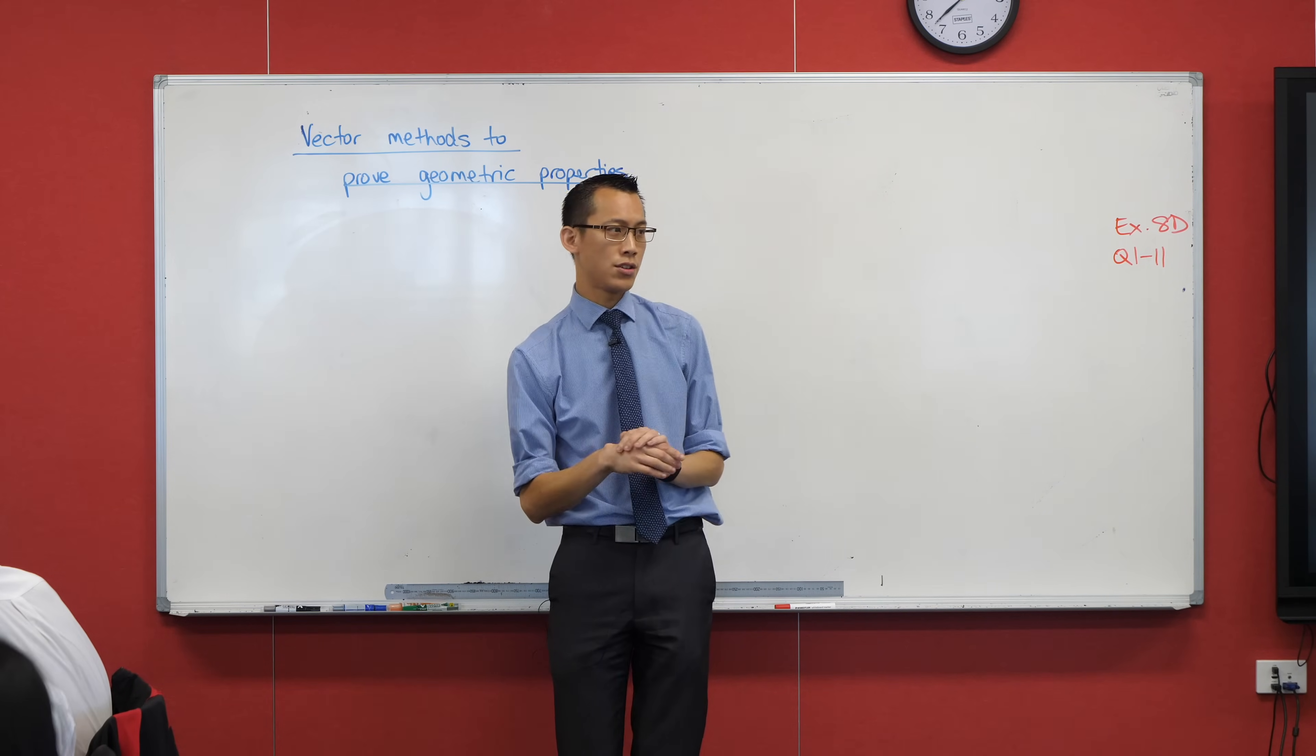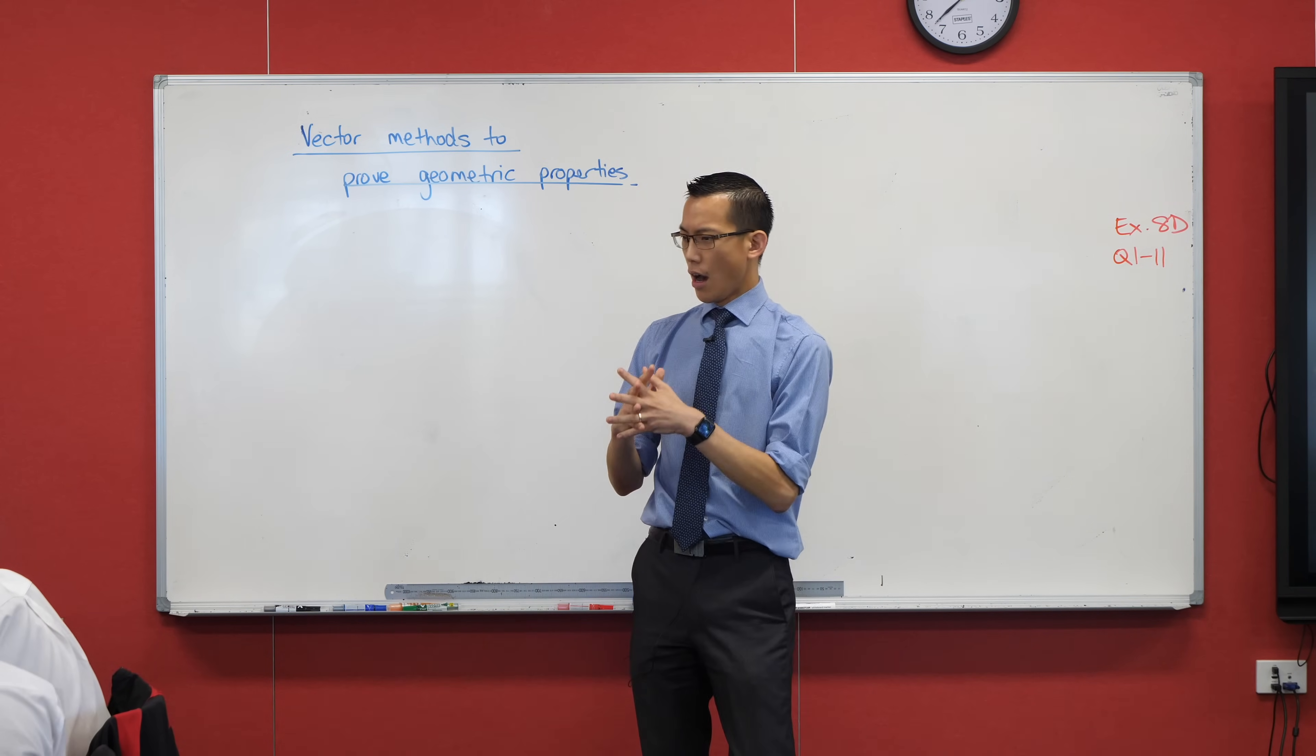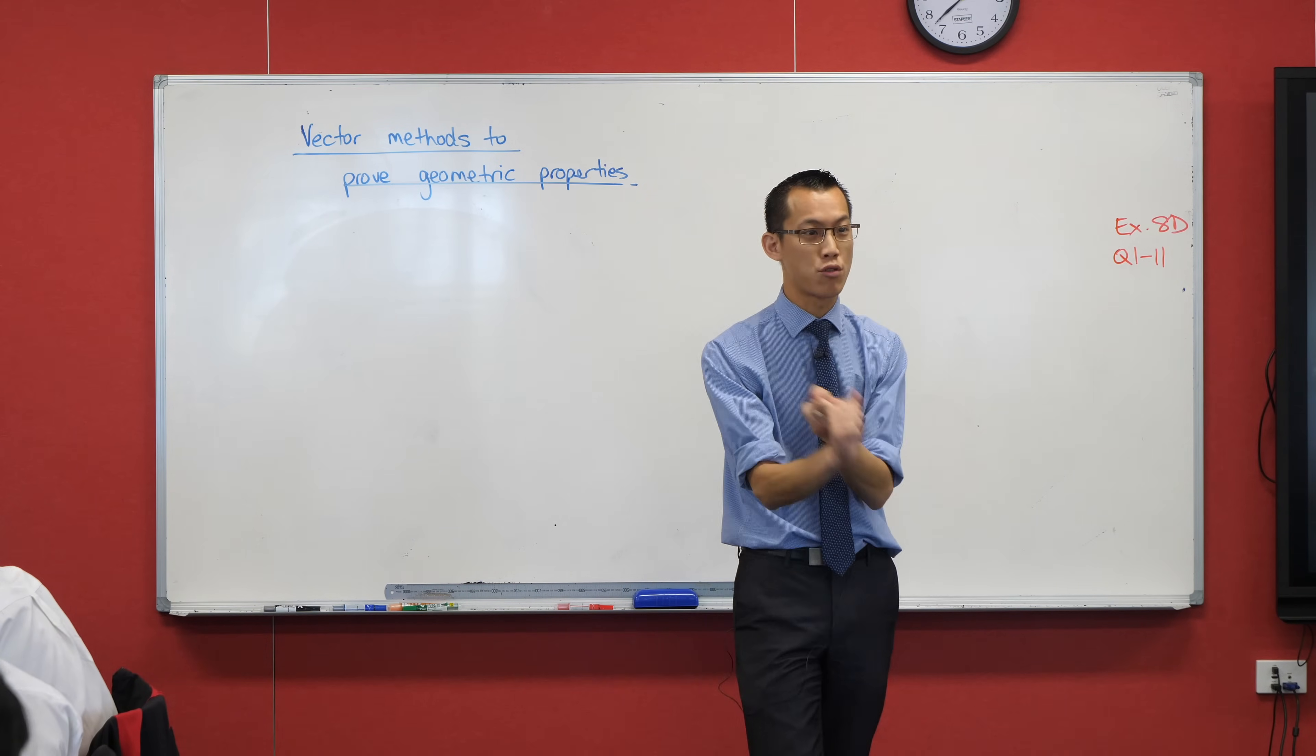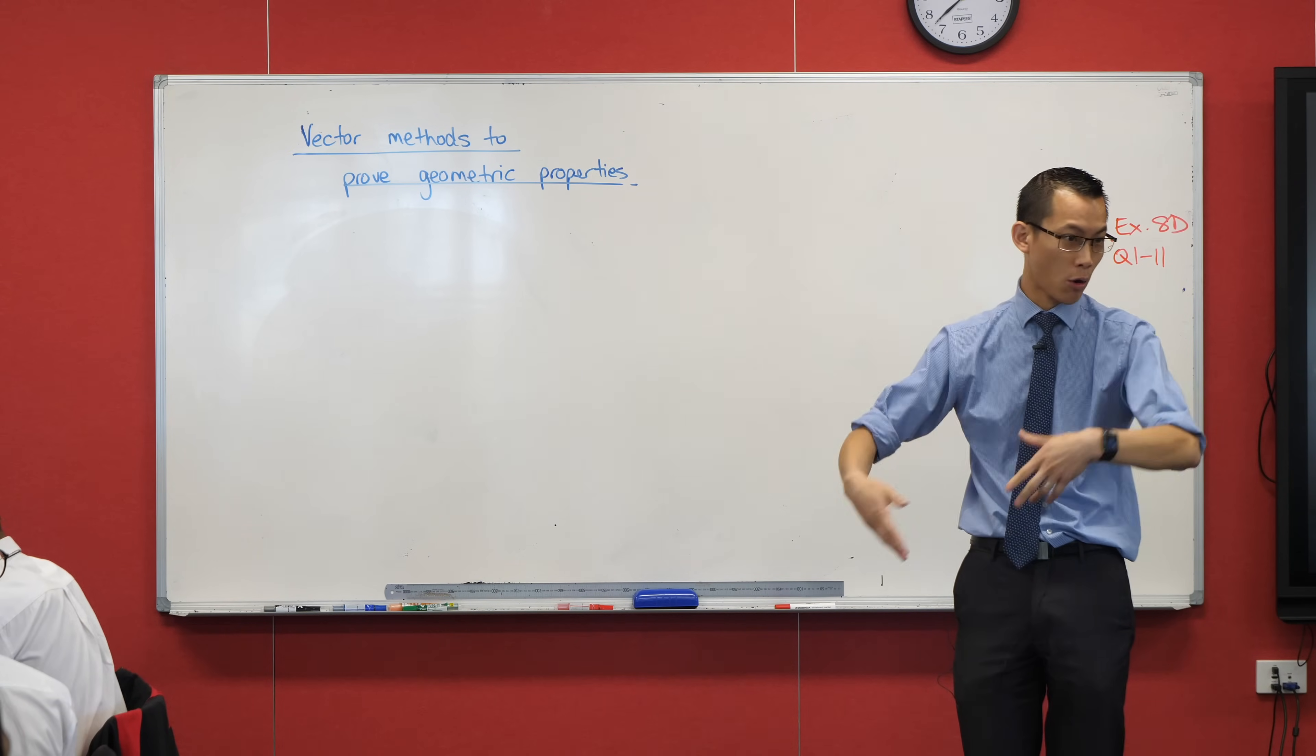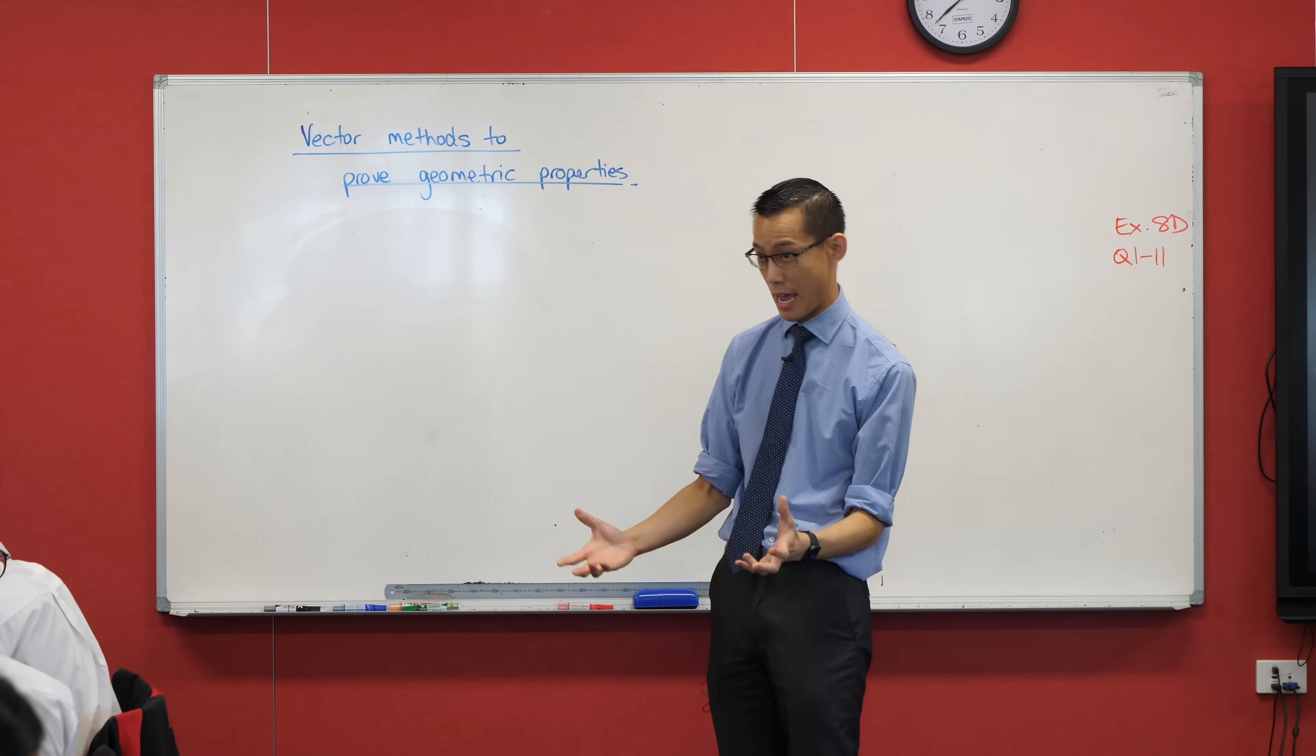I'd like you to draw on your page, and take at least half a page to do it. I'd like you to draw a quadrilateral. Don't do it yet, but you're going to draw a quadrilateral with the following properties. Number one, it needs to be different to the quadrilateral of the person next to you or around you. I want you all to have as different kinds of quadrilaterals as you can.